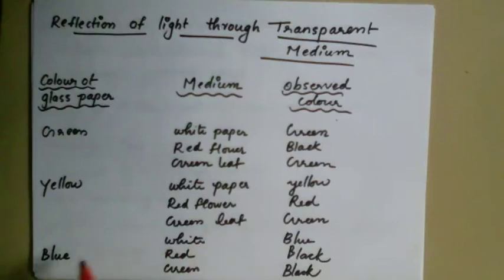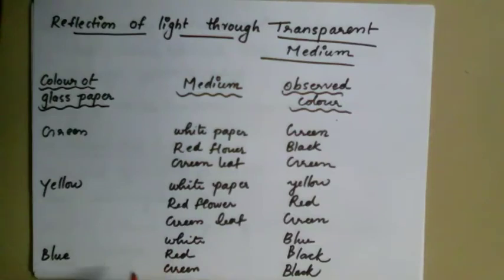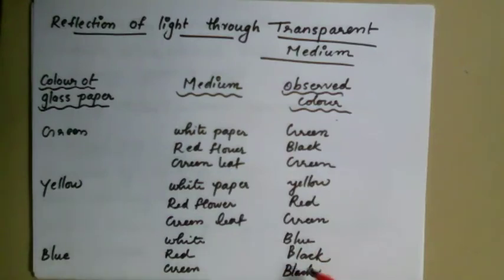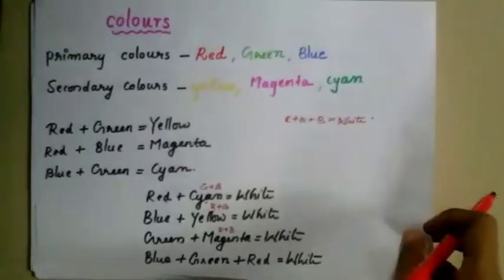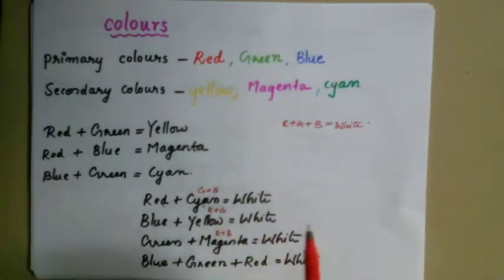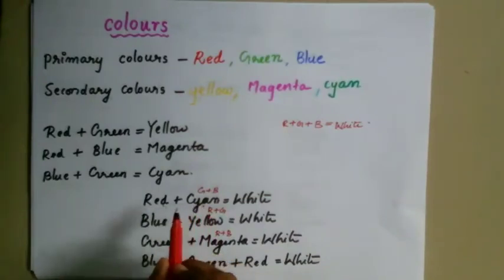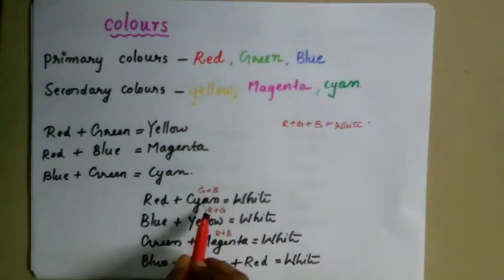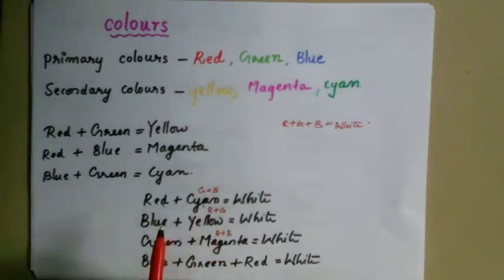Blue light on white paper appears white. Red and green on black paper appear black. Now let's look at the colors and complementary colors. White light is produced by a pair of complementary colors. We use red and cyan as complementary colors — when combined, they produce white light.